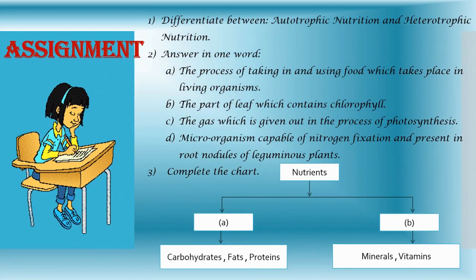Now students, there is an assignment for you all. The first question is: differentiate between autotrophic nutrition and heterotrophic nutrition. Then answer in one word: the process of taking in and using food which takes place in living organisms; the part of the leaf which contains chlorophyll; the gas which is given out in the process of photosynthesis; and the microorganism capable of nitrogen fixation present in root nodules of leguminous plants.